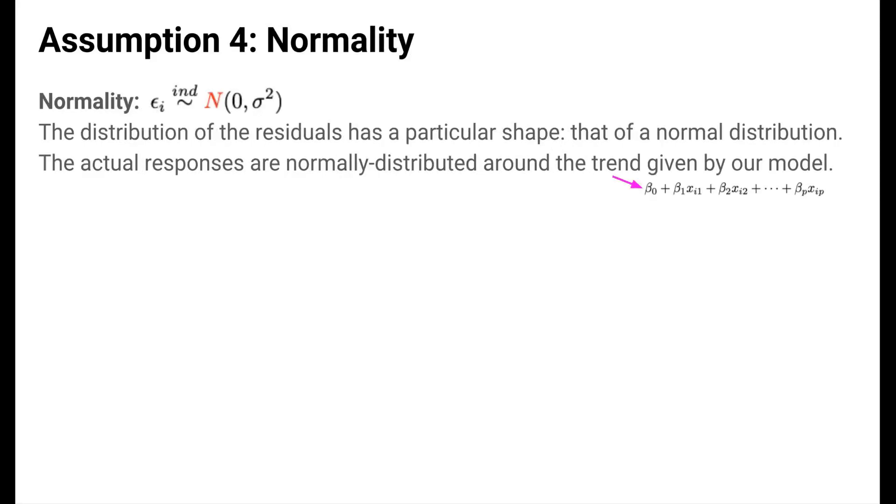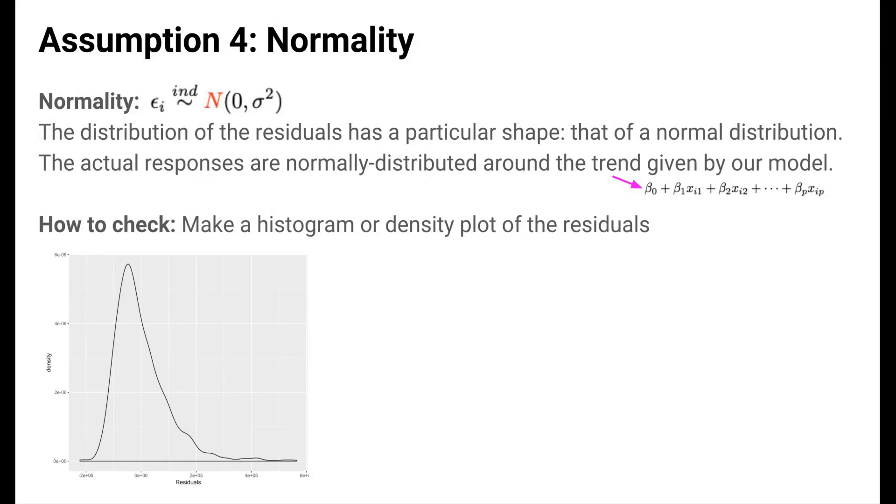The last part of the assumption is normality. We assume that the residuals follow a very particular distribution, the normal distribution. Another way to phrase this is that the actual responses in our data are normally distributed around the trend described by our model. We can check this assumption by looking at the distribution of the residuals and seeing if the distribution is shaped like a normal distribution.